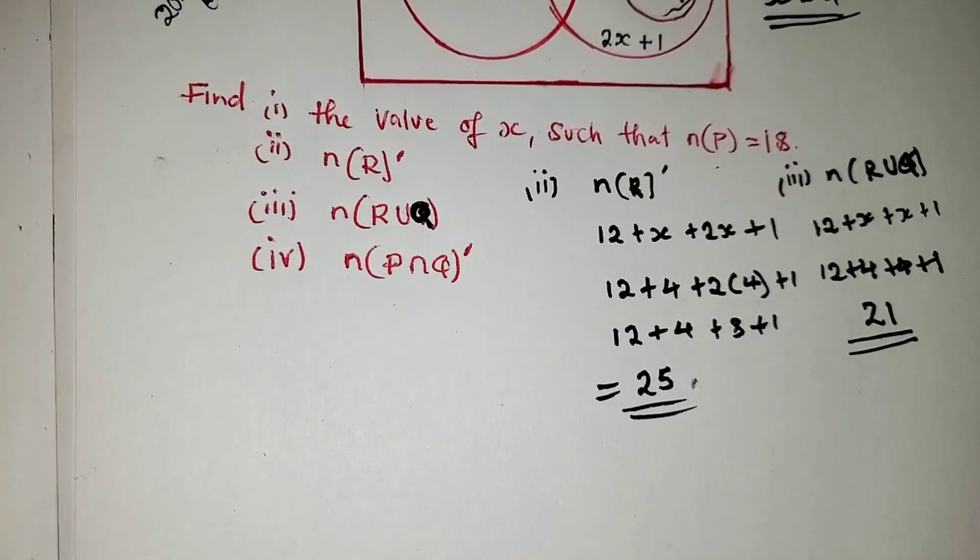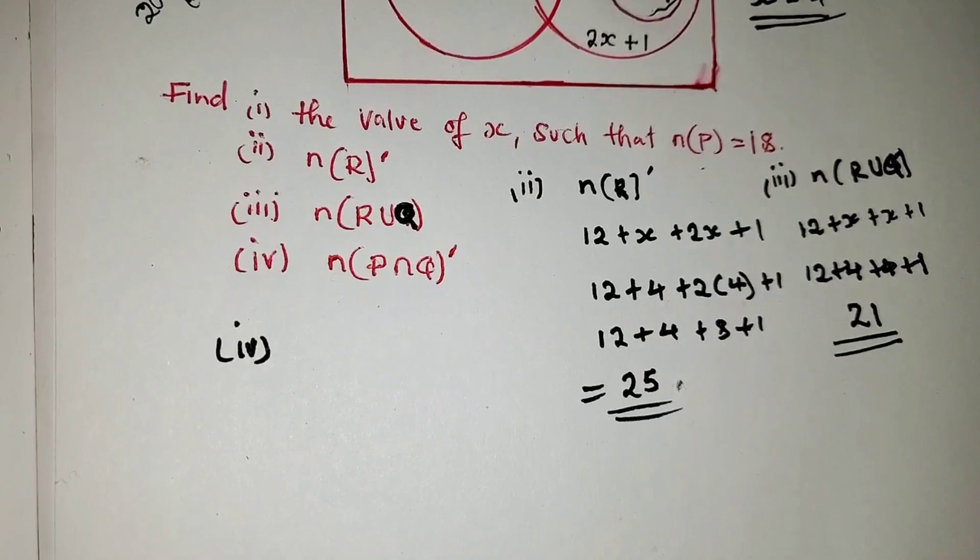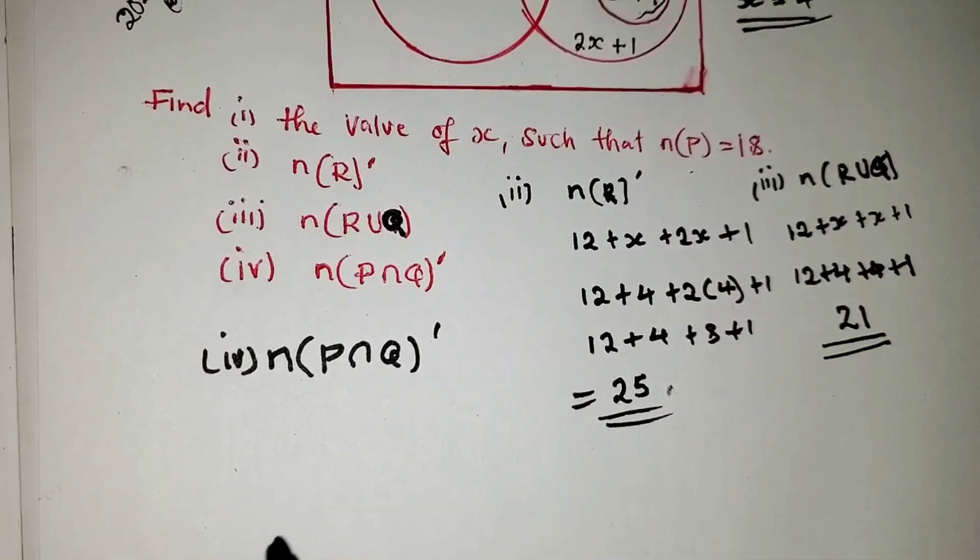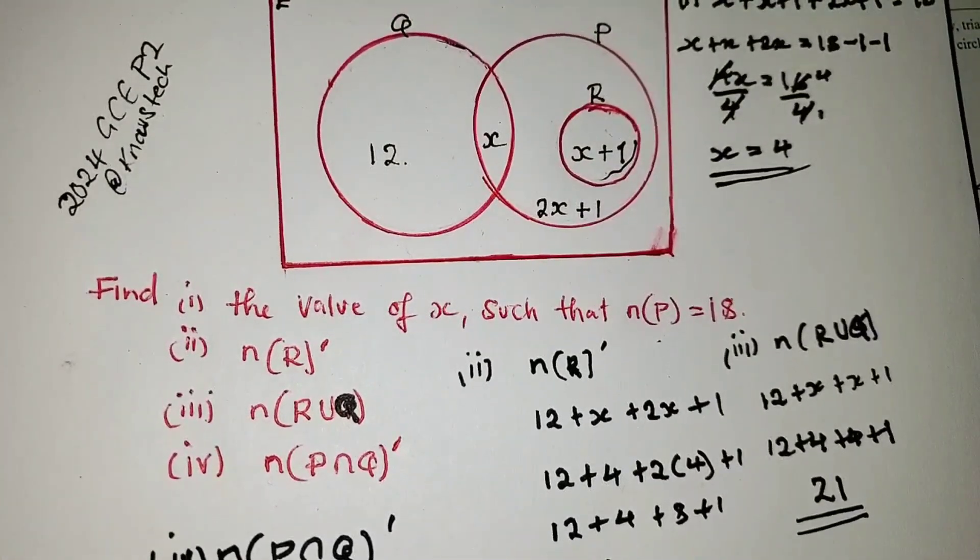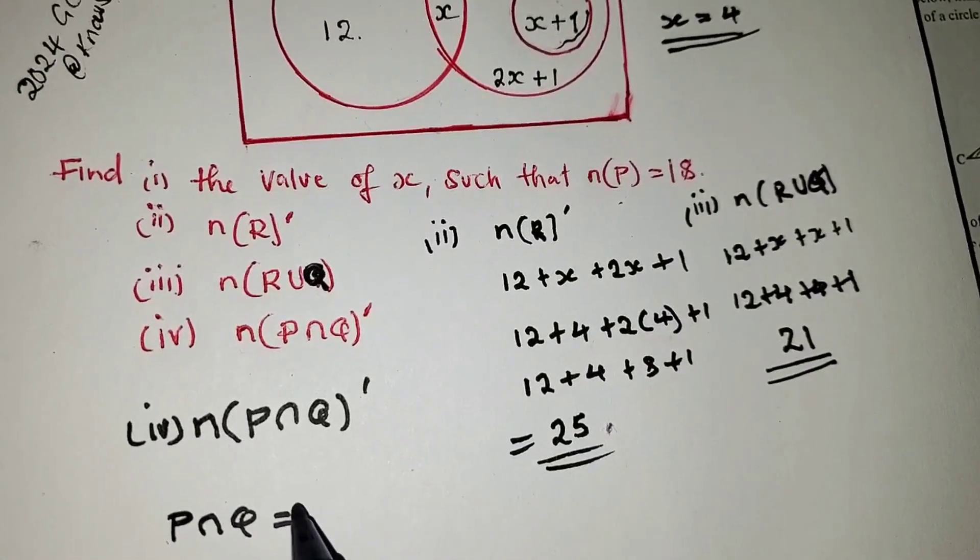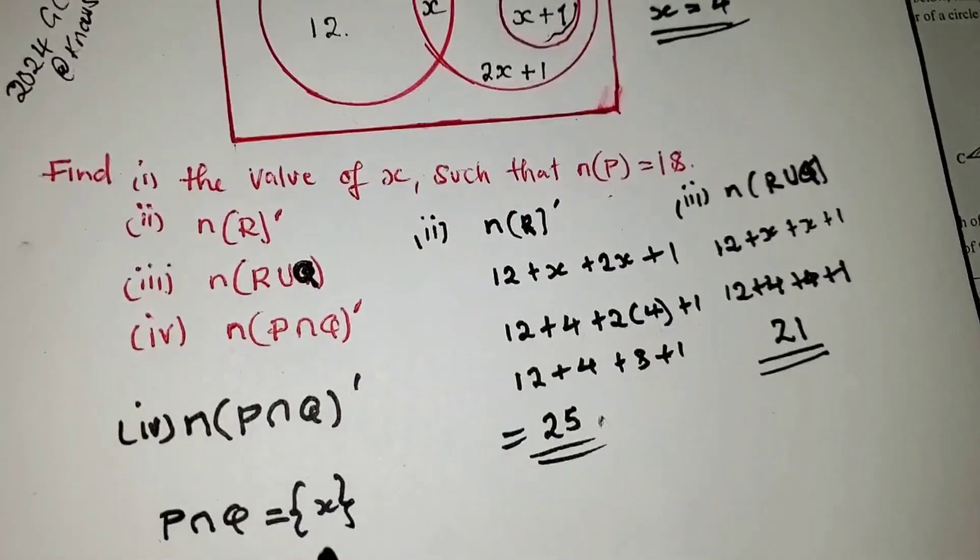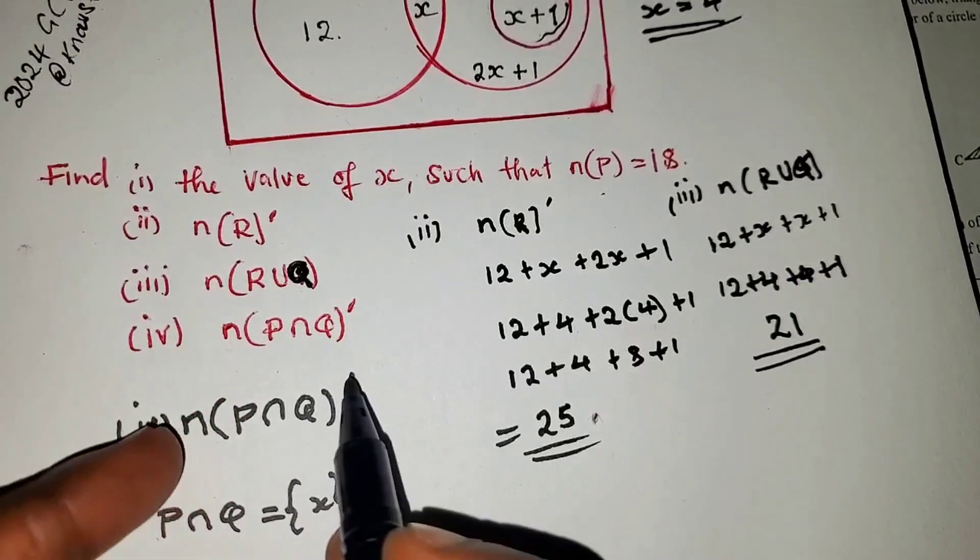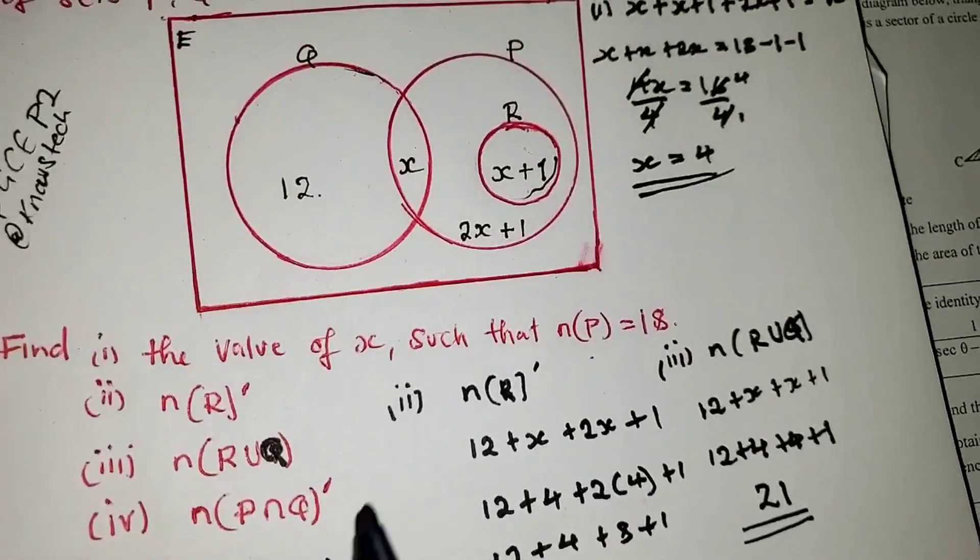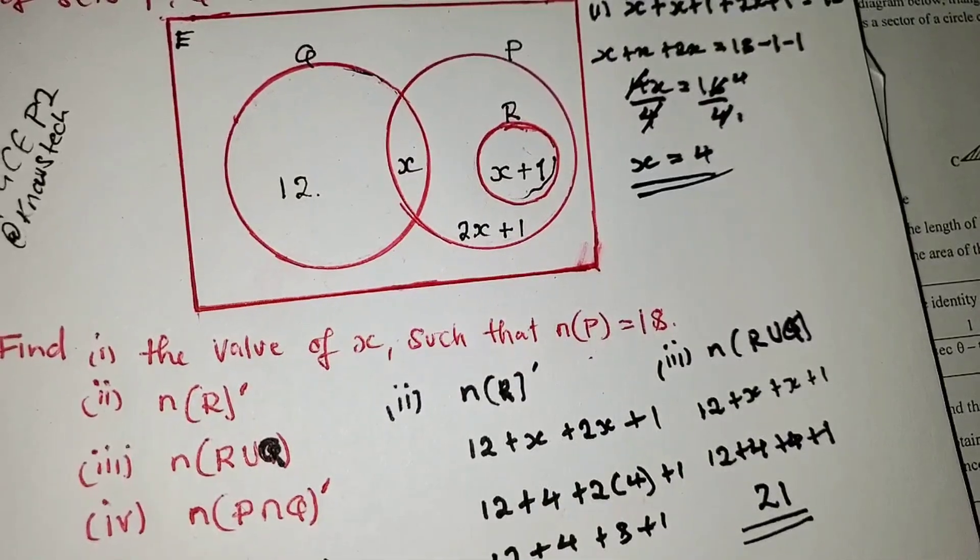Let's solve the last question, which is question 4. We are asked to find the number of elements in P intersect Q complement. So understand this. What is P intersect Q? P intersect Q is x here. So when they mean P intersect Q, the whole of it here in brackets complement, it means excluding x. Excluding x. So we are not going to consider this x. We are going to add everything apart from the x here.